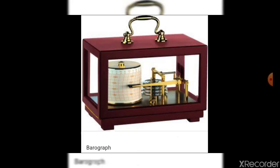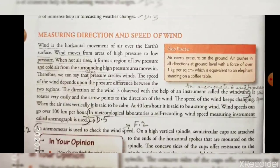Now, how to measure the direction and the speed of wind? Wind is a horizontal movement of air over the earth's surface. Wind moves from areas of high pressure to area of low pressure. When the hot air rises, it forms a low pressure area and the cold air from the surrounding high pressure area moves in. Thus, pressure creates winds.